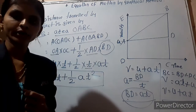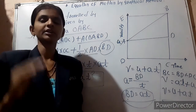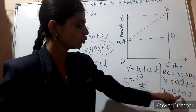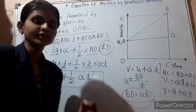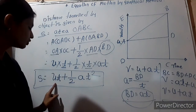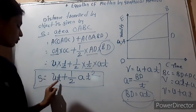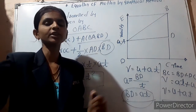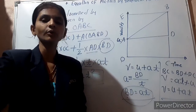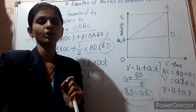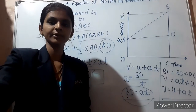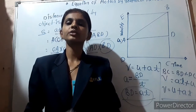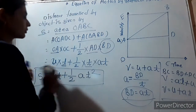According to the graphical method, the first equation of motion is v equals u plus at, and the second equation of motion is s equals ut plus one-half at squared. Now let us find out the third equation of motion by using the graphical method.